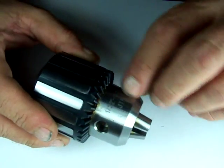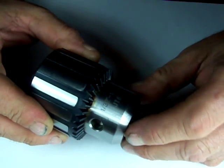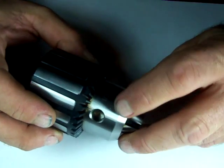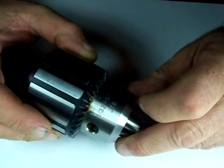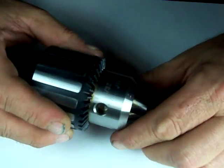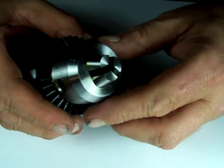You can see down on the lower part of the body right here there's numbers which indicate the size of the chuck and the type of mount it uses. This particular chuck says 3/32 by 1/2 inch, meaning the 3/32 is the smallest diameter this chuck will hold.